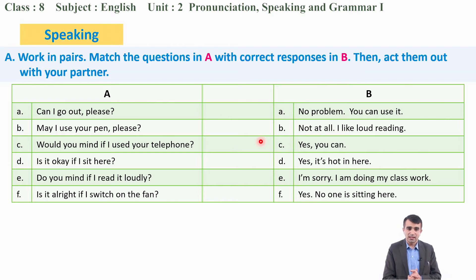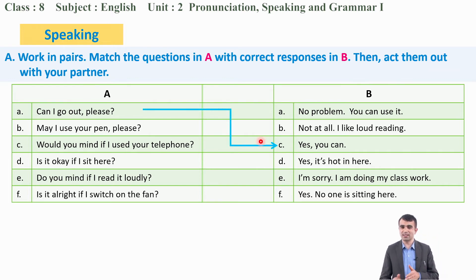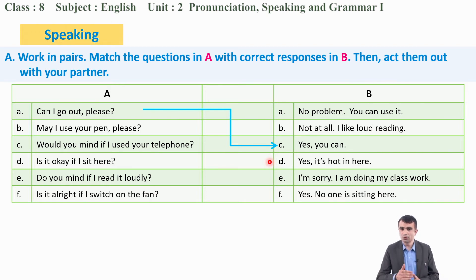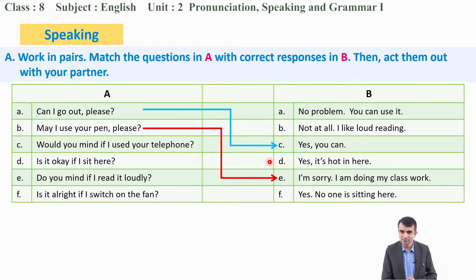Let's go through the answers. 'Can I go out, please?' — the response is 'Yes, you can.' 'May I use your pen, please?' — the response is 'I'm sorry, I'm doing my classwork.' 'Would you mind if I used your telephone?' — the response is 'No problem, you can use it.'